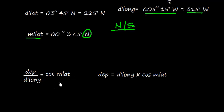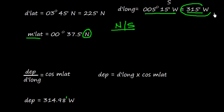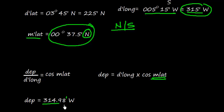We know the plain sailing formula: departure divided by D-long equals cosine of mean latitude. So departure equals D-long times cosine of mean latitude. Using D-long of 315 minutes and the mean latitude angle with cosine, I am using the Casio FX 991MS calculator and I get departure equal to 314.98 minutes.